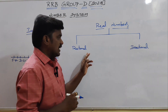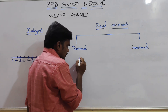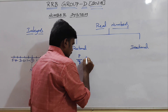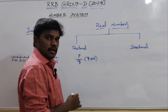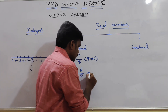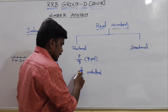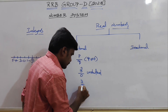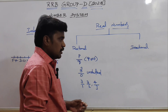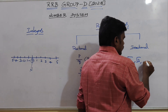Coming to real numbers — it is classified into two types: rational numbers and irrational numbers. For rational numbers, the formula is P by Q, but the condition is Q must not be equal to 0. Because if Q is 0, for example 3 by 0, it is undefined. So 3 by 1, 3 by 2, 4 by 3 — these are called rational numbers. For irrational numbers: root 2, root 3, root 5.